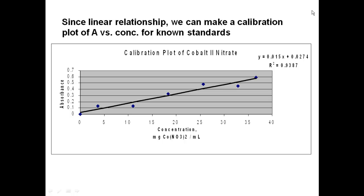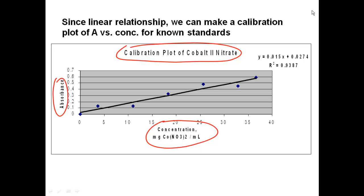Since there's a linear relationship, we can make something called a calibration plot of absorbance versus concentration for known standards. Take some known concentrations, measure the absorbances, and make a calibration plot. In this plot, absorbance is on the y-axis, concentration in milligrams per milliliter of cobalt nitrate is on the x-axis, and the title is the calibration plot of cobalt(II) nitrate.